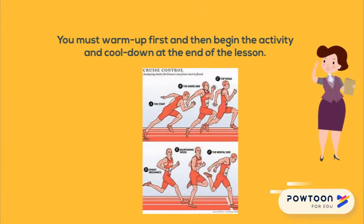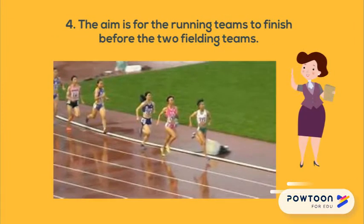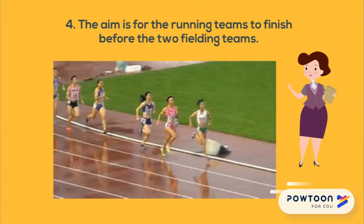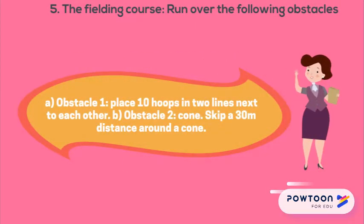On the 400 meter track: number one, there will be four teams. Number two, Team A and B will run over obstacles. Number three, Team C and D will run a distance of 400 meters. Number four, the aim is for the running teams to finish before the two fielding teams. The running teams will run three athletes at the same time; the fielding teams will race one at a time.